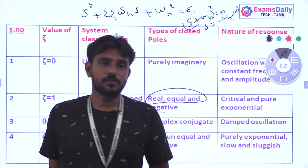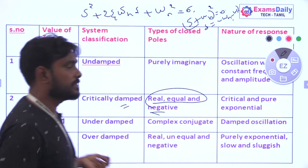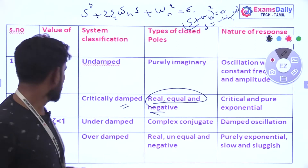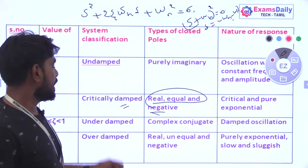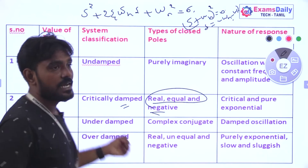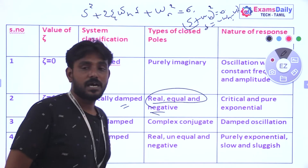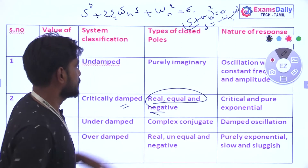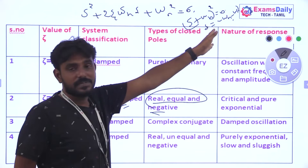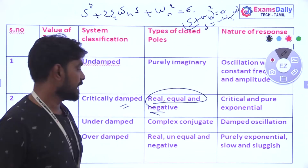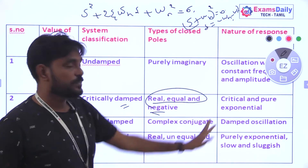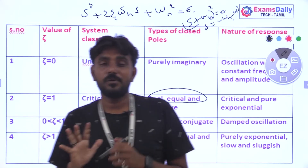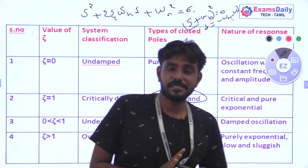Fourth case: when ζ is greater than 1, the system is overdamped. The poles are real, unequal, and negative. The response is purely exponential — slow to settle. Most systems should be underdamped rather than overdamped.